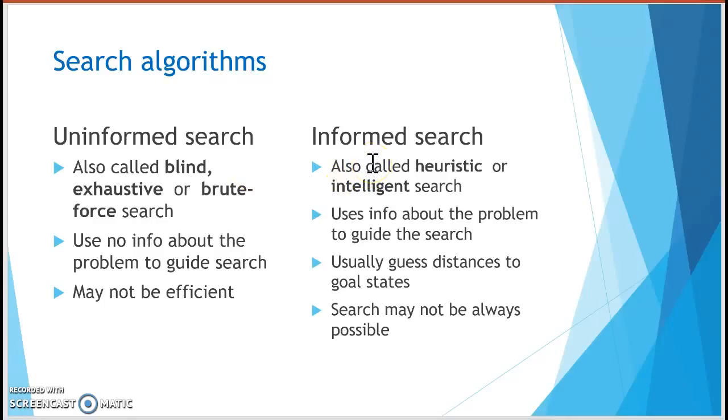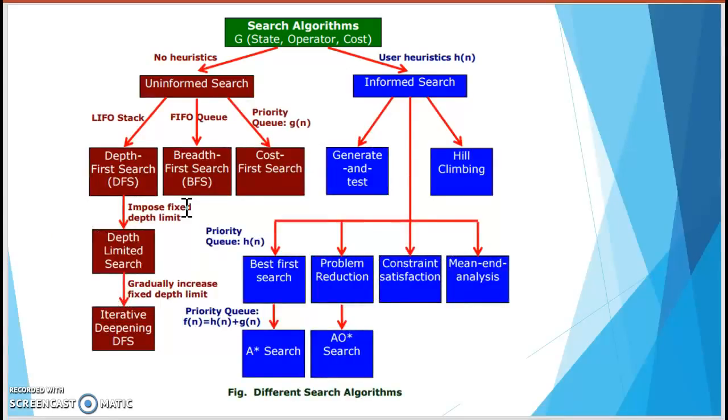And the second one is an informed search. That means that we have some heuristic or intelligent search here. We know what is in the future or the next node. But for uninformed search, also called as blind, exhaustive or brute force search, we just go to the next node without knowing what is the value of the next node.